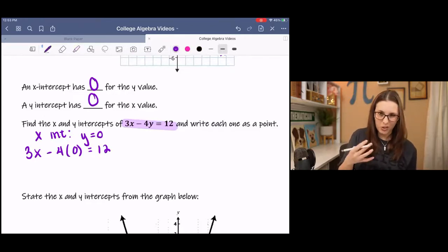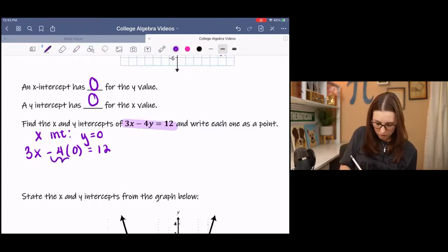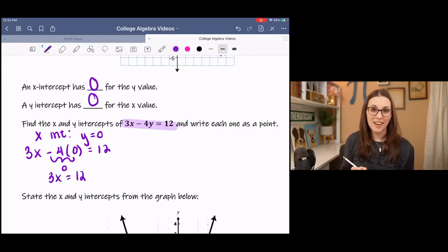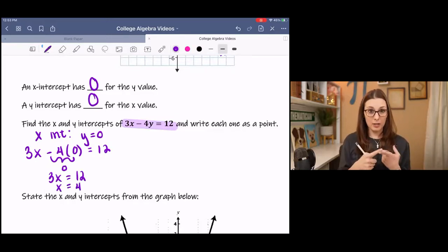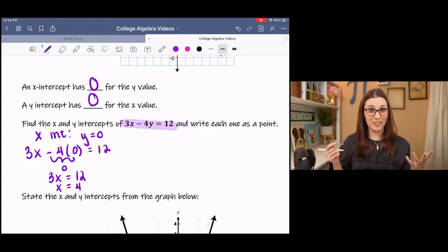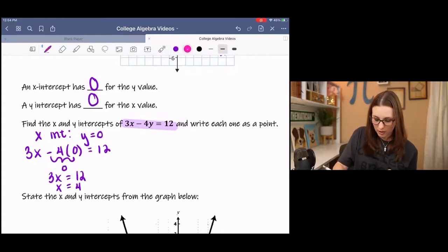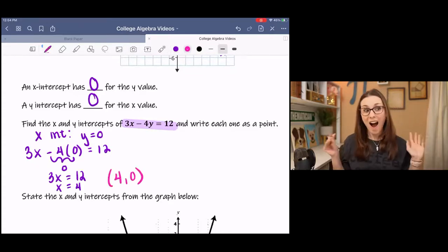Which means that I can substitute 0 in place of y in this equation. And anything times 0 is just 0. So I don't really need to write that, and I'm left with 3x equals 12. And then when you solve, you divide by 3 to get 4. So now we have an x-value, and we know the y-value is 0, which gives us our point. Our point is 4, 0. Yay!